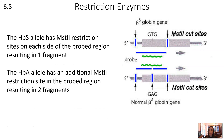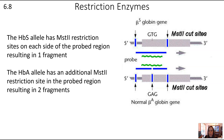The HbS allele on the top cuts on each side of the probed region, which means there will be one probed fragment. The HbA allele on the bottom has an additional restriction site — because there are three restriction sites, it gets cut into two fragments that are in the detectable probed region.